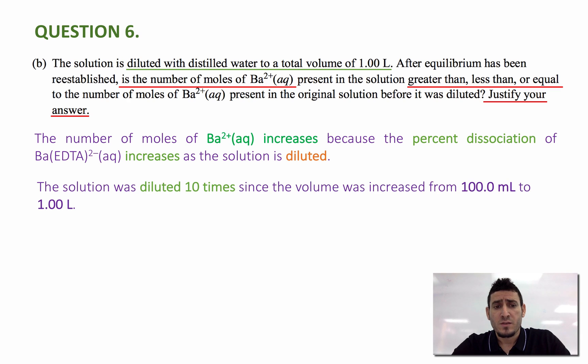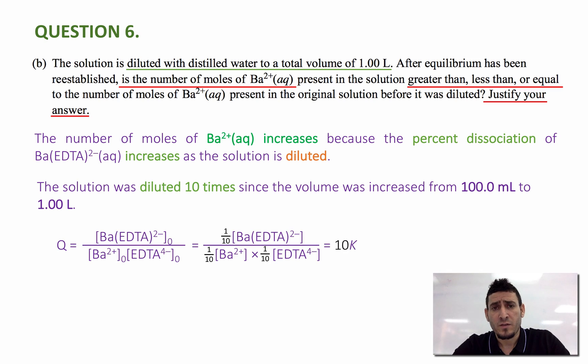Now, the solution was diluted 10 times since the volume was increased from 100 milliliter to 1 liter. The expression of the reaction quotient, Q, is similar to that of the equilibrium constant, except that we use the initial concentrations. If we replace the initial concentrations by 1 over 10 multiplied by the equilibrium concentrations, we get that Q equals 10 times K.